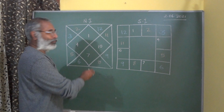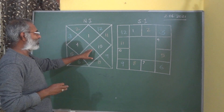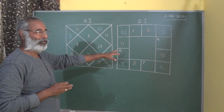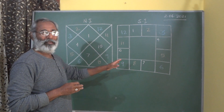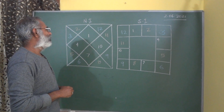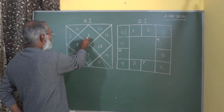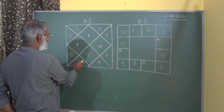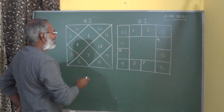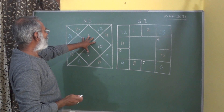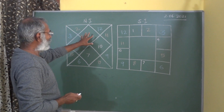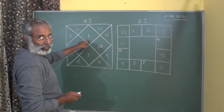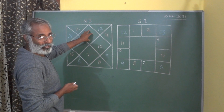I have taken both charts here — the North Indian style and the South Indian style — so that people can relate, because many of them are not able to understand the South Indian style immediately. In the North Indian style, the houses are numbered 1 through 12. The houses are fixed; the signs keep moving. This is always the first house, always the Lagna, but it is not always Aries.